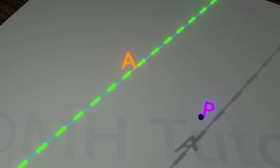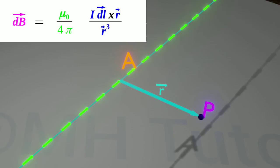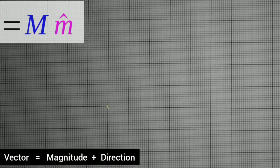And here it is. The vector form of this law is written like this. Note that there are arrows over the letters of dB, DL, and R. They indicate that there are three vectors in this equation.